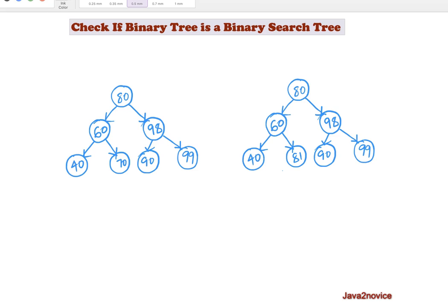What is a binary search tree? In a binary search tree, any given node must have at most two children, and a node's value must be less than or equal to its left subtree node values. Similarly, the given node value must be greater than its right subtree node values.